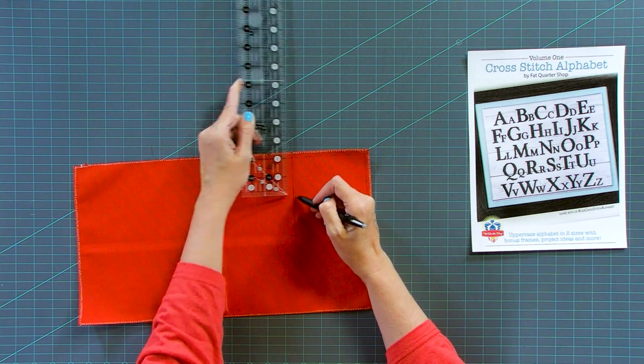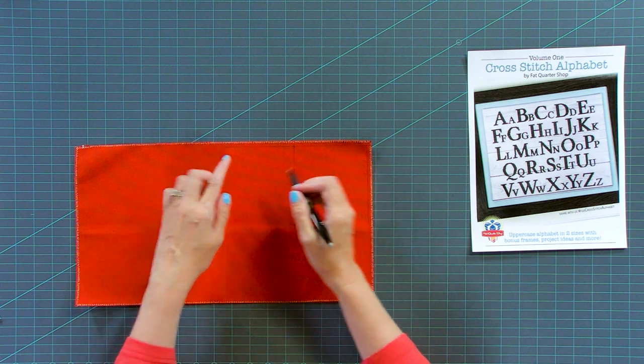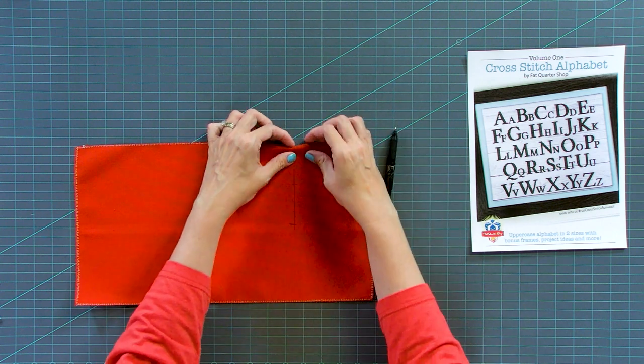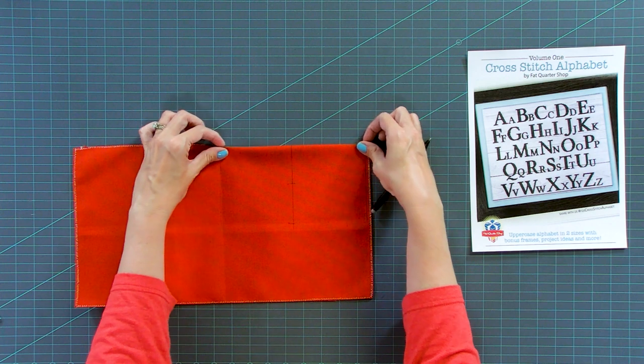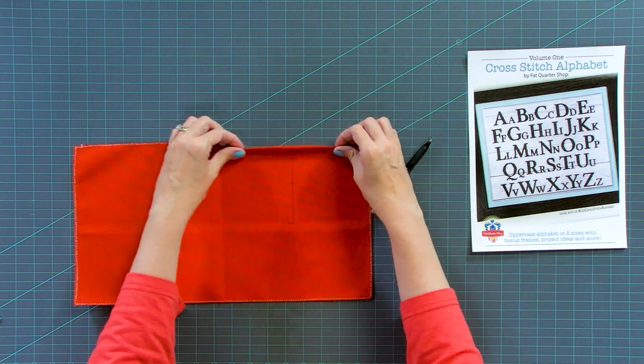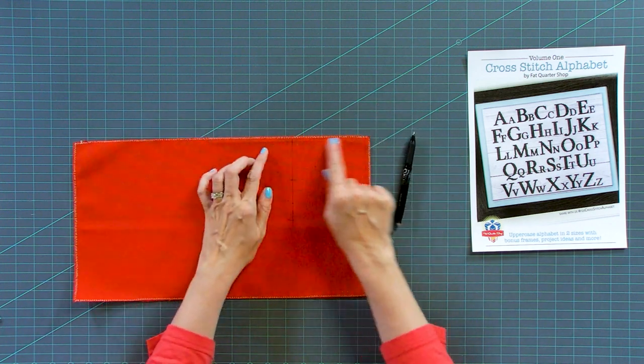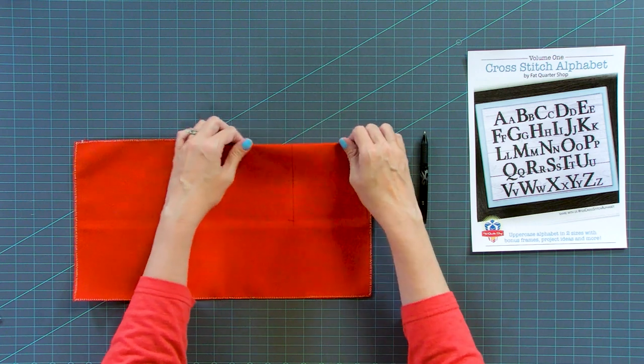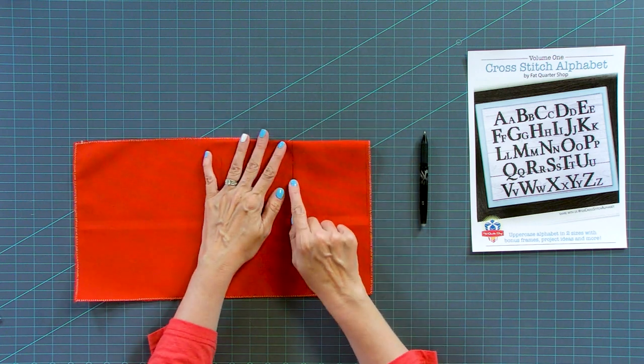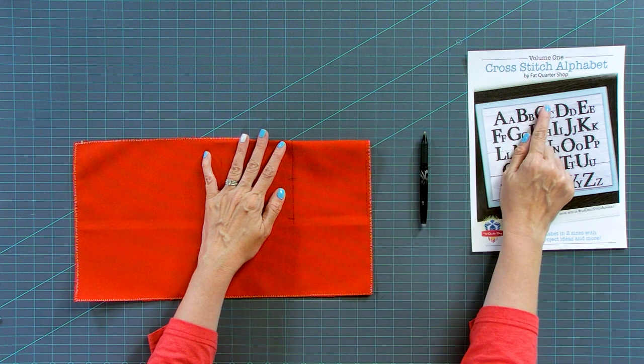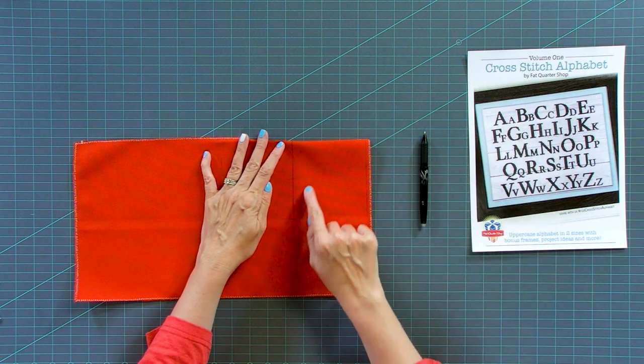So right here's the center. So what we did there is we found the center, but we accounted for having this quarter inch seam in your cuff. So by doing the quarter inch around, we have found the center. And what you're gonna do is you're gonna use the large letter from the cross stitch alphabet for your last name.